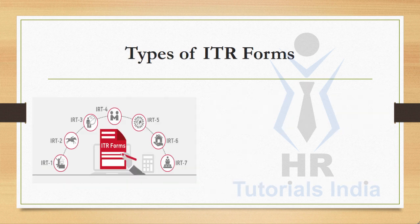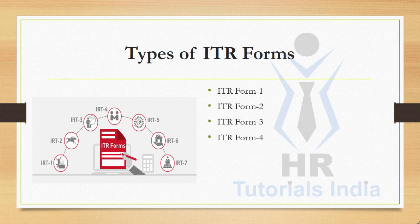Types of ITR forms. There are seven different ITR forms: ITR Form 1, ITR Form 2, ITR Form 3, ITR Form 4, ITR Form 5, ITR Form 6, and ITR Form 7. Now let us see in detail about each ITR form.